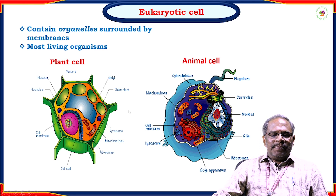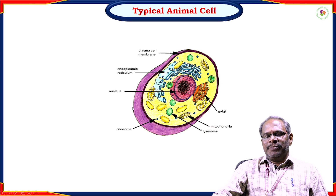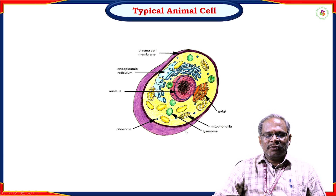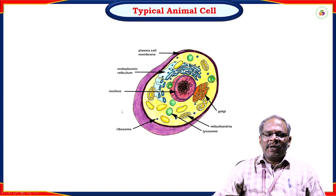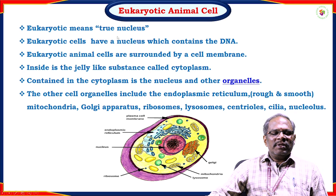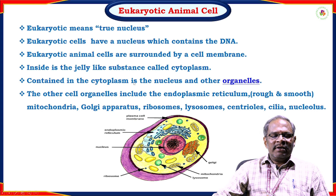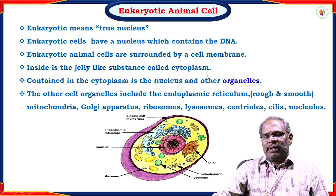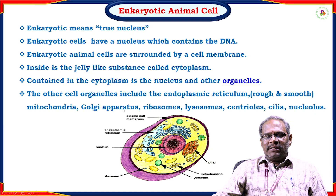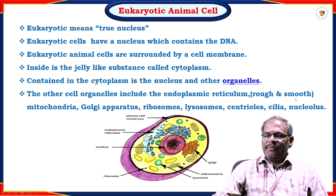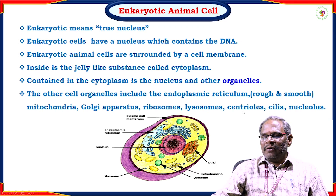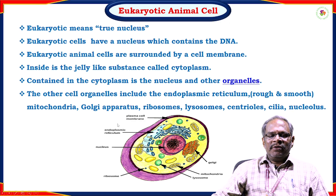A typical animal cell contains mitochondria, lysosomes, ribosomes, the nucleus at the center, endoplasmic reticulum, and plasma cell membrane. Eukaryotic cells have a nucleus which contains the DNA material. Eukaryotic animal cells are surrounded by a cell membrane, inside which is a jelly-like substance called the cytoplasm containing the glycolysis cycle, the nucleus, and other organelles, including rough and smooth endoplasmic reticulum, mitochondria, Golgi complex, ribosomes, lysosomes, centrioles, cilia, and nucleus. These organelles are present in eukaryotic cells only; the Golgi complex, mitochondria, and endoplasmic reticulum are not found in prokaryotic cells.